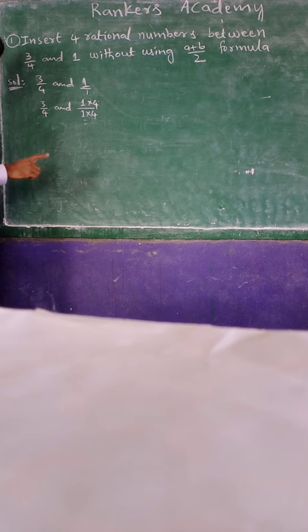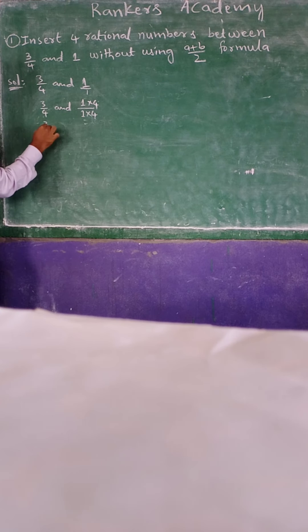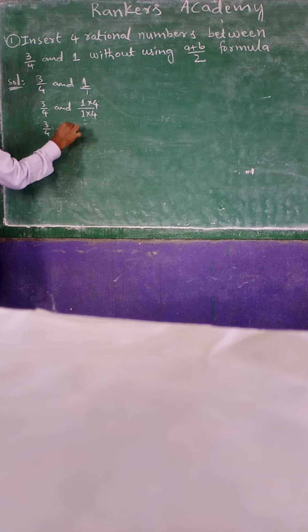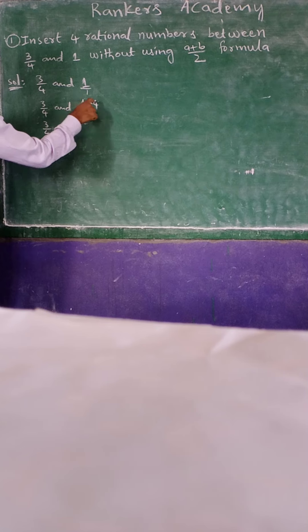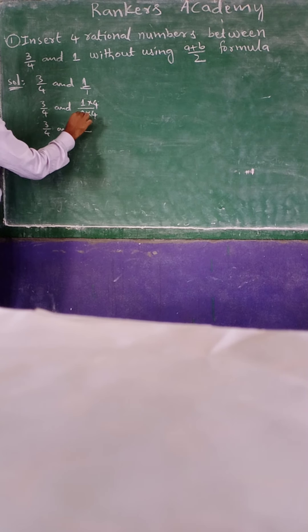So only we have to multiply and divide with the same number. So 3/4 and here 1 into 4. Now equal denominator.